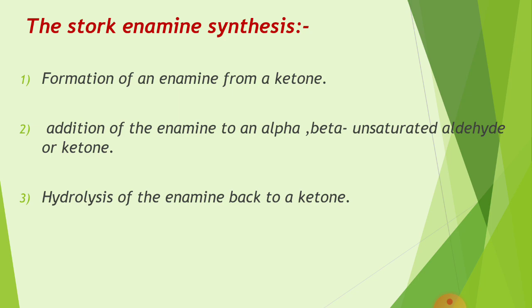The Stork enamine synthesis has the following steps. First step: the formation of an enamine from a ketone. Second step: addition of the enamine to an alpha-beta unsaturated aldehyde or ketone. Third step: hydrolysis of the enamine back to the ketone.